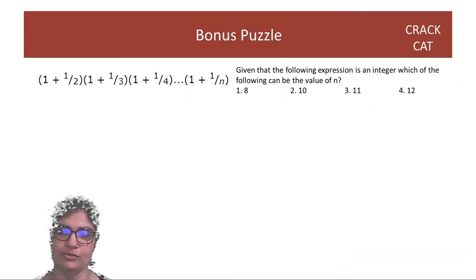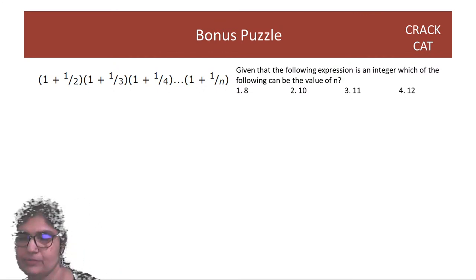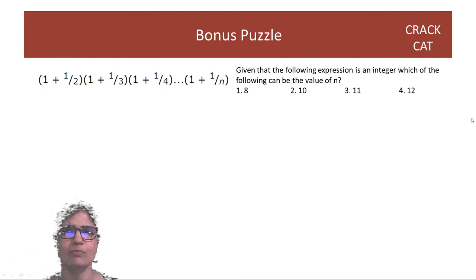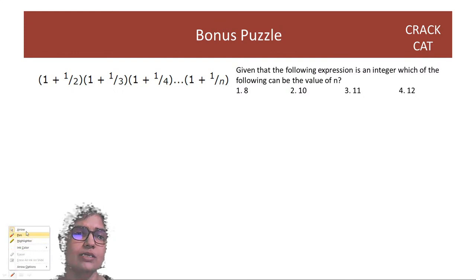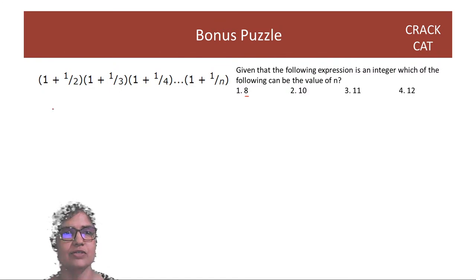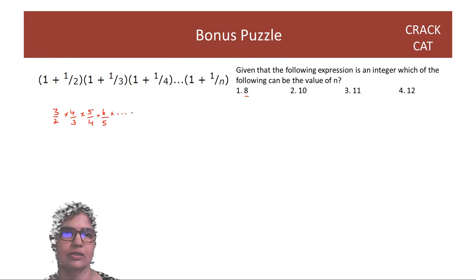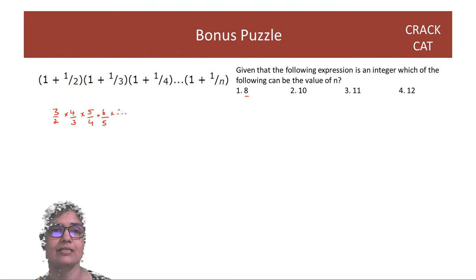Let's start with the puzzle from the afternoon. You have an expression and you need to find for which value of n it will be an integer. Because the numbers are small, it's tempting to substitute. You get 3/2, 4/3, 5/4, 6/5 — and if we stop at n=8, we have (7/6) × (8/7) × (9/8).